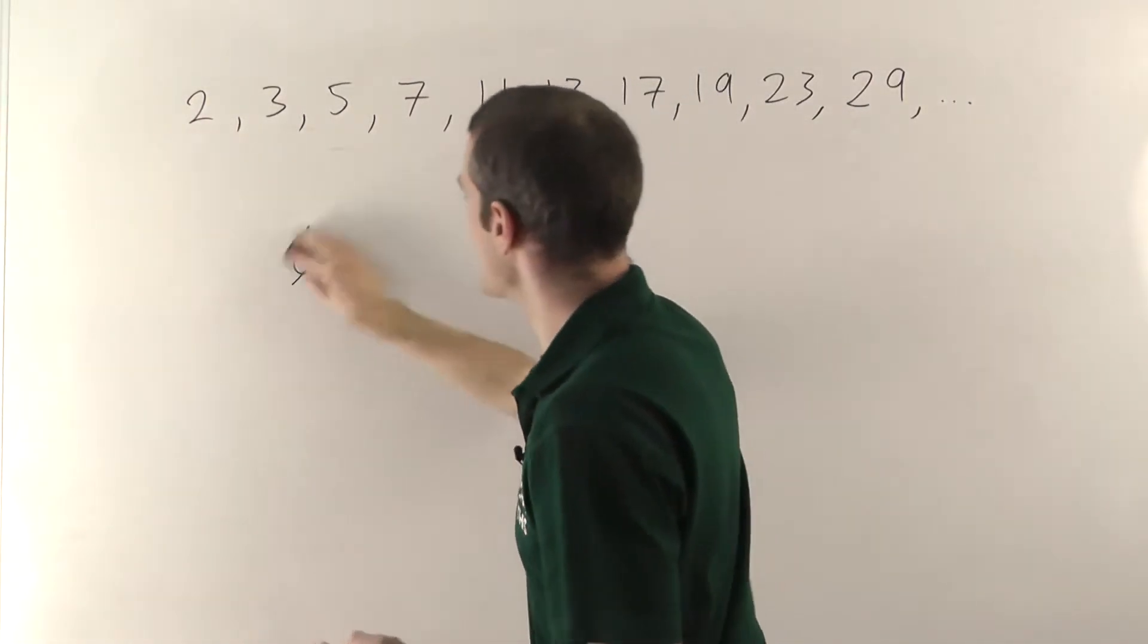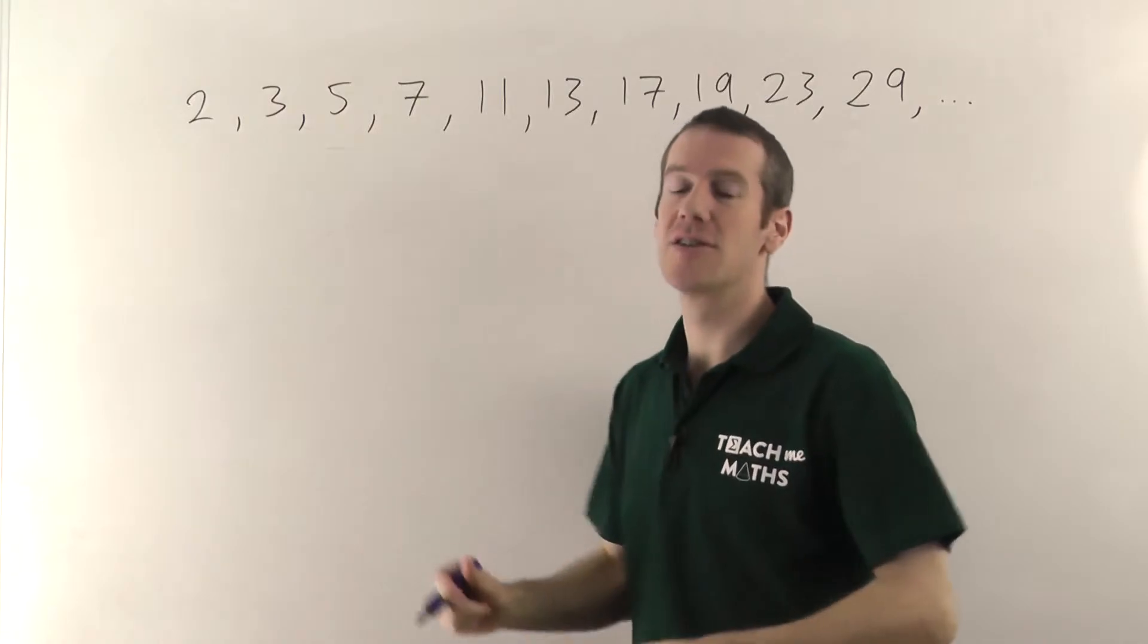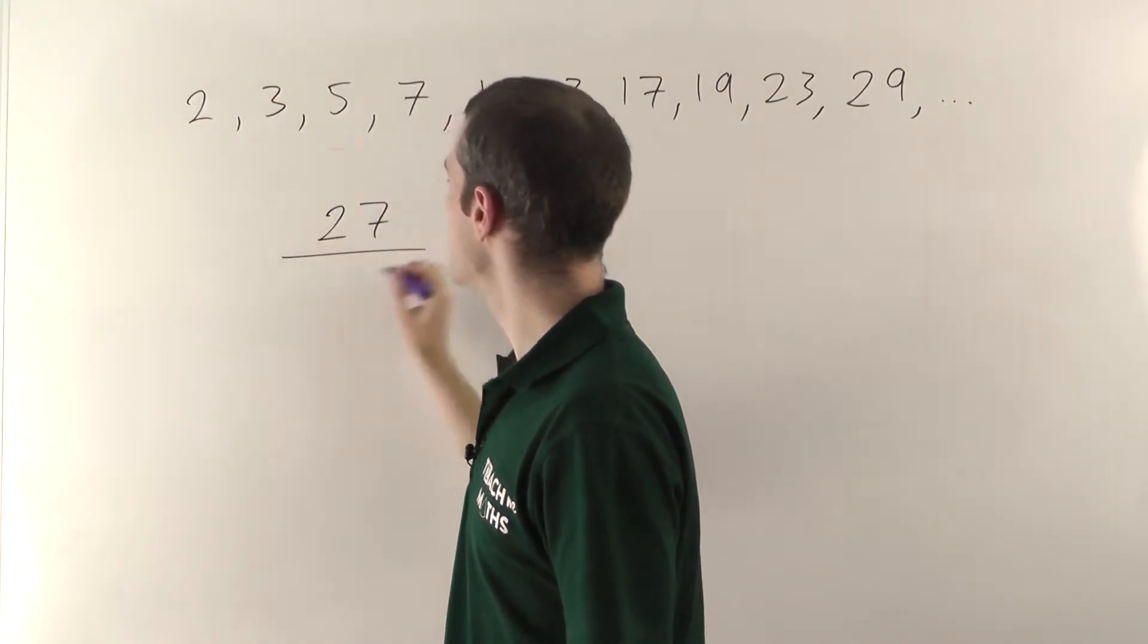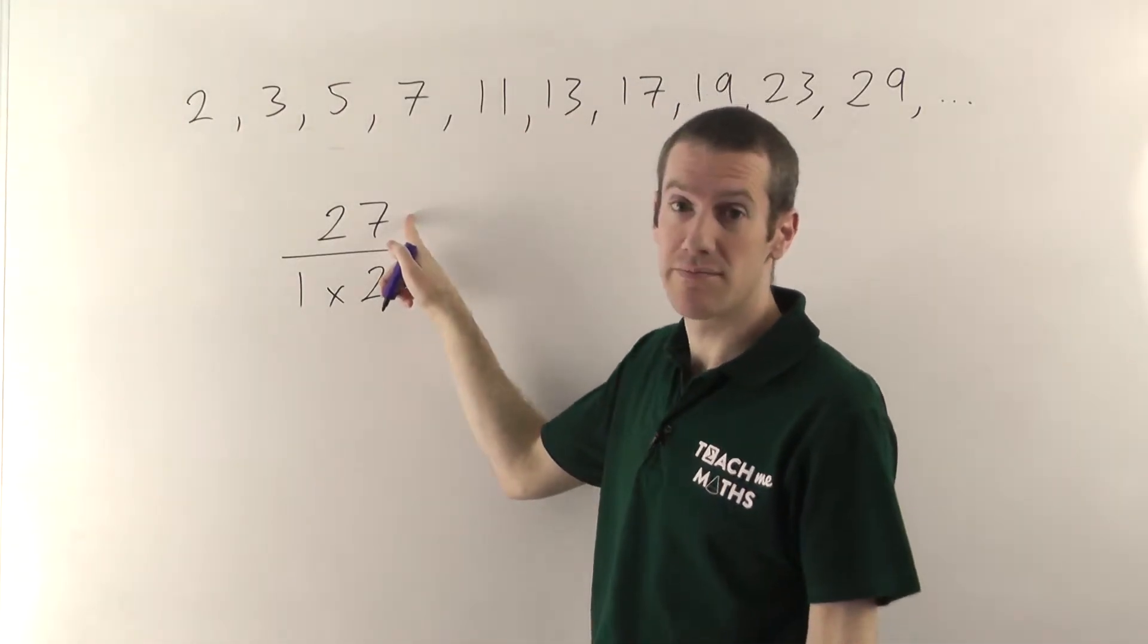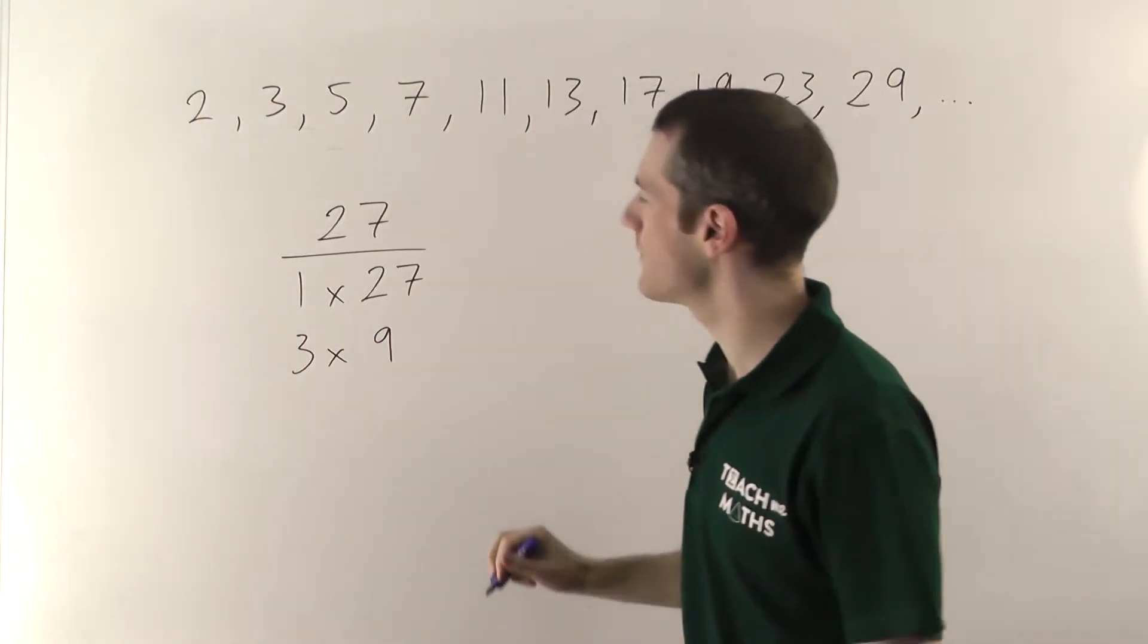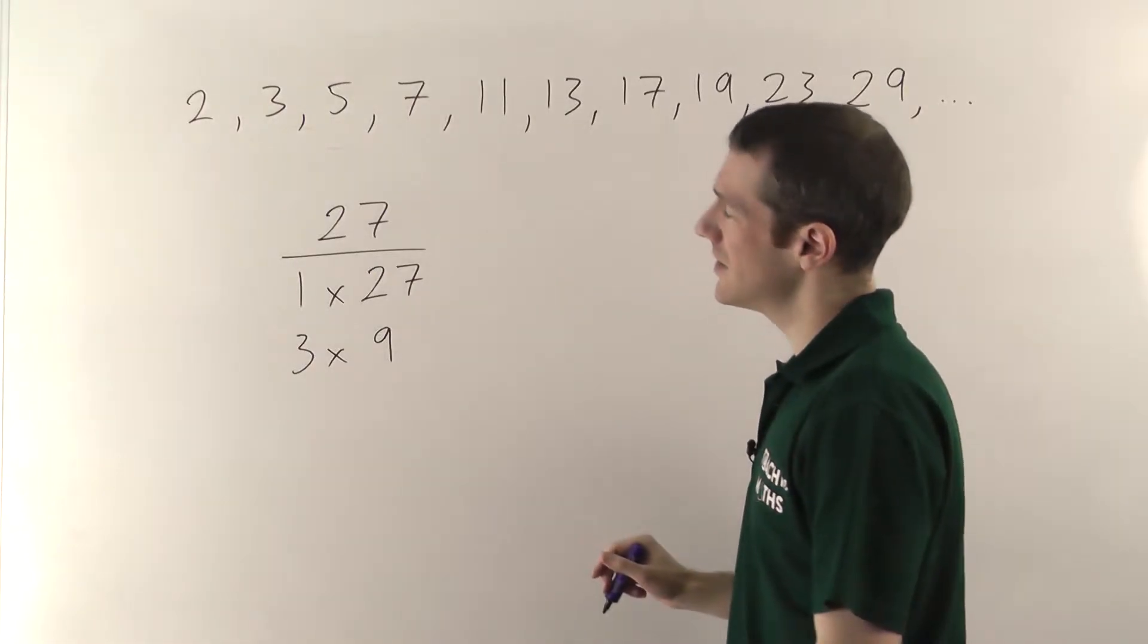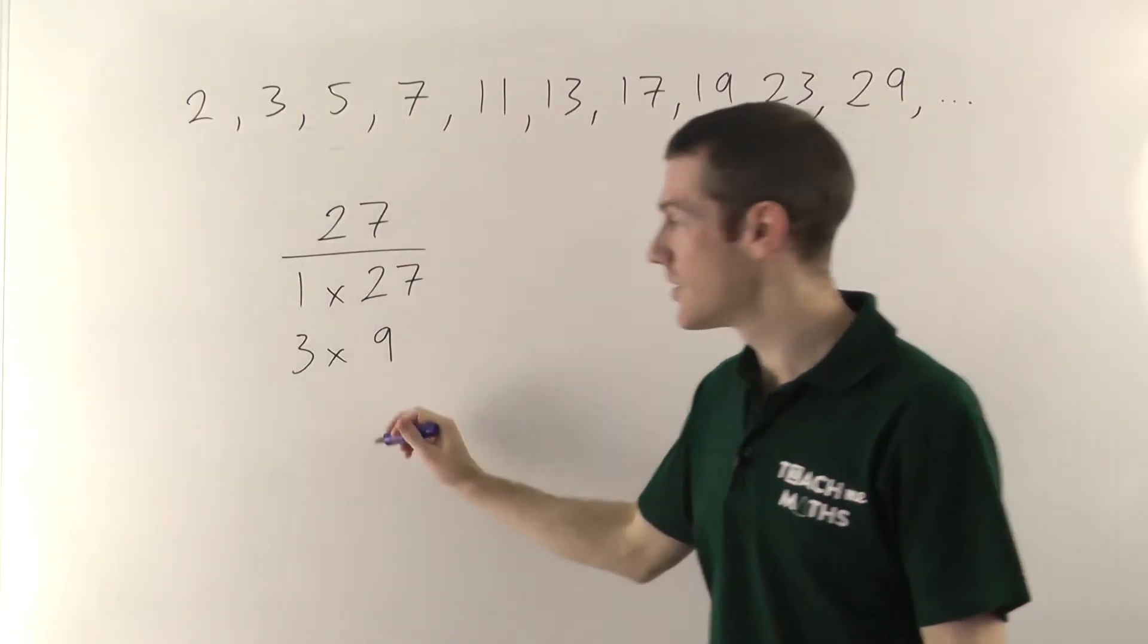So, that's the first kind of question you could be asked, but the other thing they might do is they say, find all the factors of a certain number and then write down which ones are prime. So, let me show you. Imagine we have to find all the factors of 27. So, again, using our method, you say 1 times 27 gives you 27. Does 2 go in? No, it's not even. Does 3 go in? Yes, 3 times 9 is 27. Does 4 go in? No. 5? No. 6? 6 will go into 30, so no. 7? No. 8? Again, it's not even, so it can't be 8. 9, we've already got, so you stop.